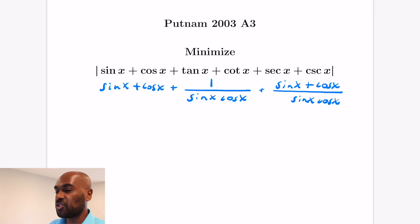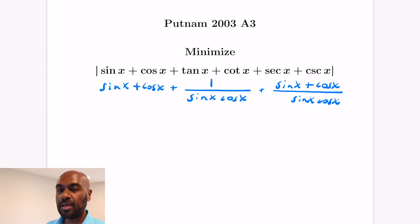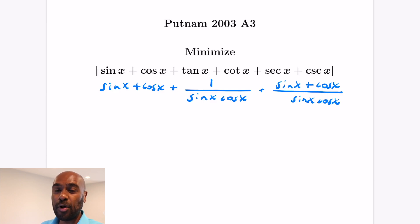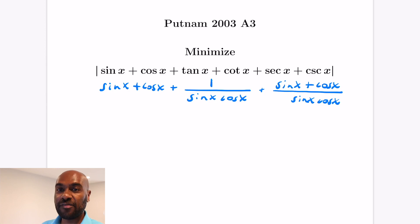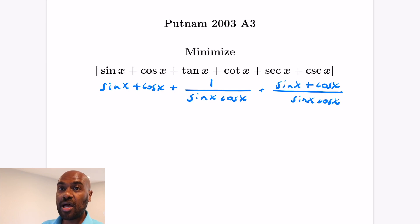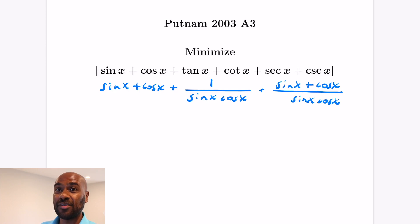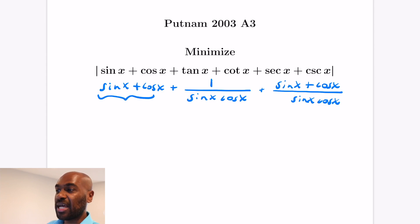Now we have everything in terms of sine and cosine. You might think to use calculus by differentiating, but we have two different things: a sum of sine and cosine, and a product. It would be nice to combine both compactly in terms of one trigonometric expression. The strategy is to use sum and product angle formulas to compactify sin x + cos x in terms of one angle, and similarly write sin x cos x in terms of that same angle.